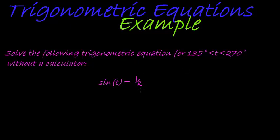In other words, what value can t take so that sine of t is equal to a half, but t must be in this interval between 135 degrees and 270 degrees. And actually I think I made a mistake, that must be negative 135 degrees. So keep it as negative 135 and 270 degrees.